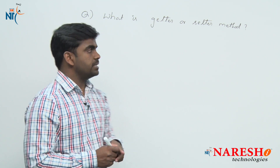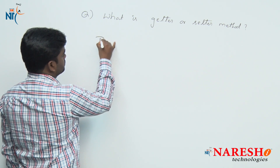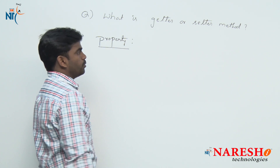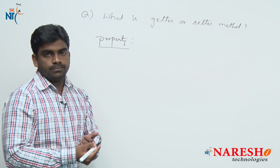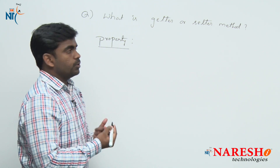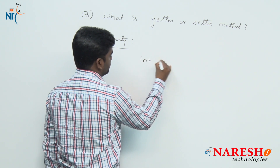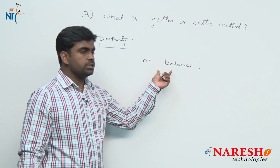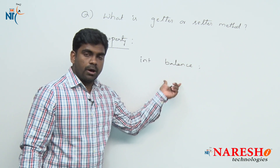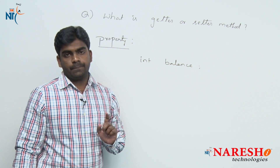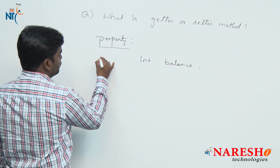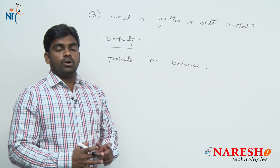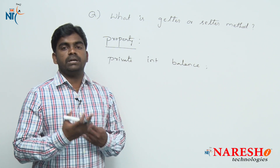What is getter and setter? For example, if you take a property — because a property is always private — I am taking one property of any account holder. The property is balance. Balance is not visible to all; we should provide security to this balance, or a password or account number, it is not visible from outside. We are protecting it by defining it as private. The account holder is an object, but the properties are private.